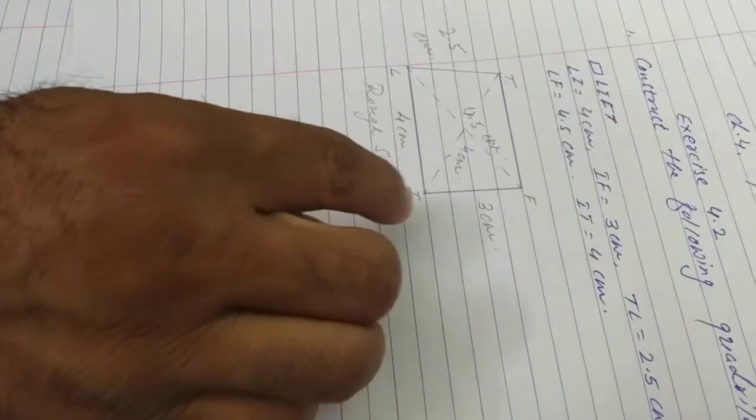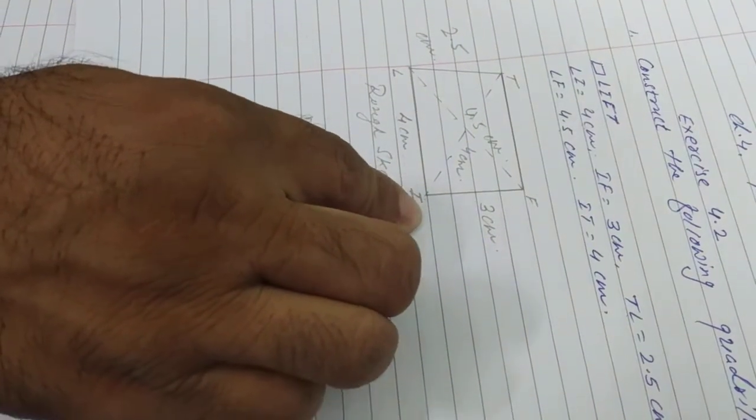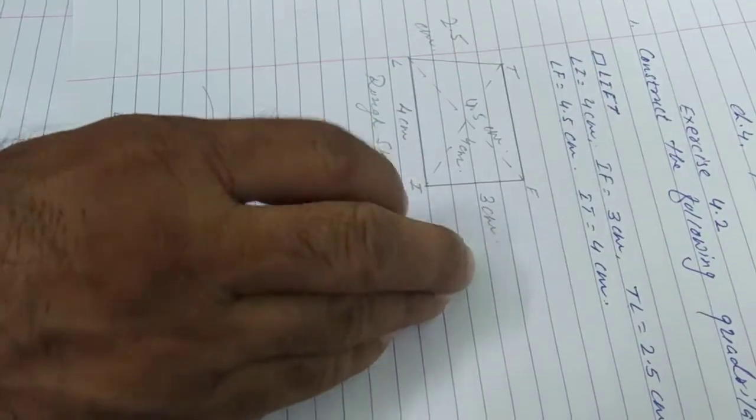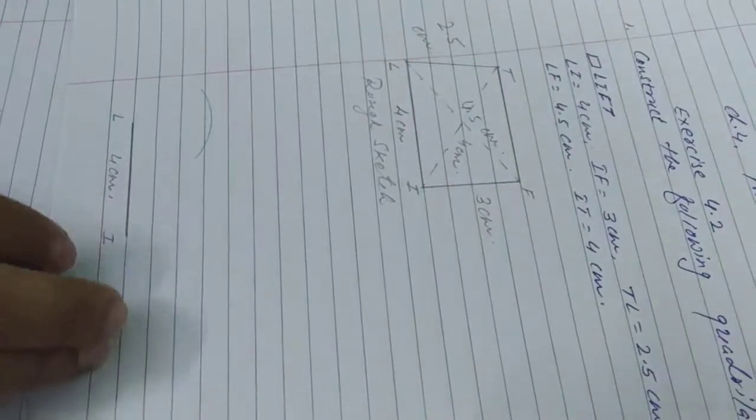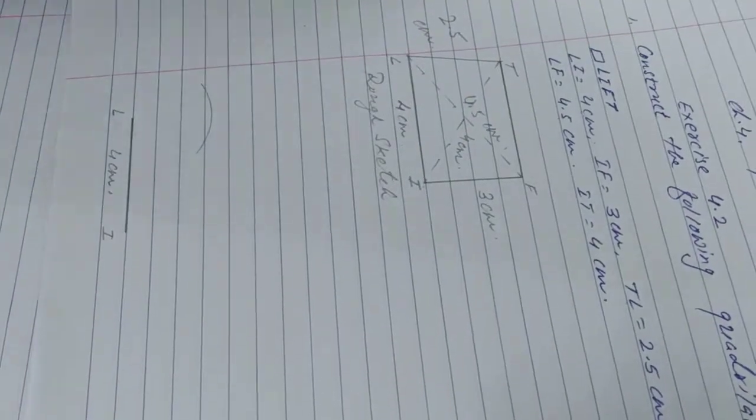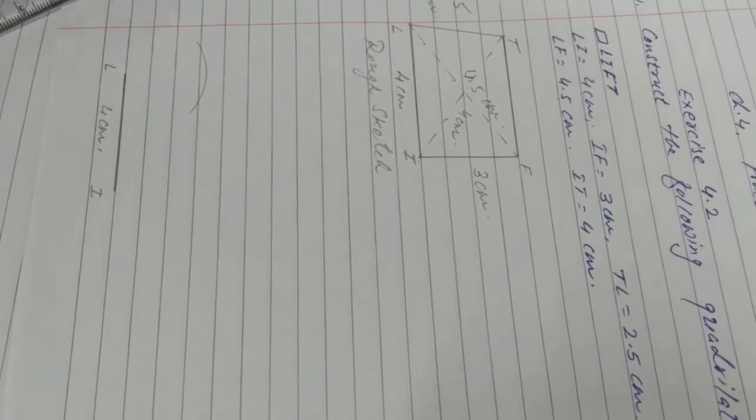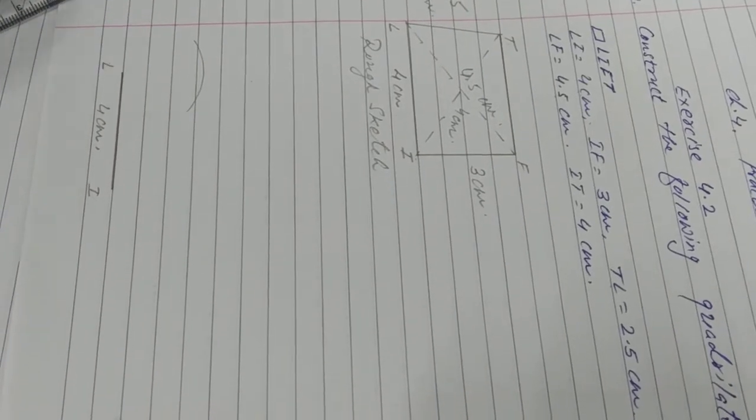Now, then after, which is the next point, I. IT. How many cm? 4 cm. One diagonal, which will be intersect at point T.